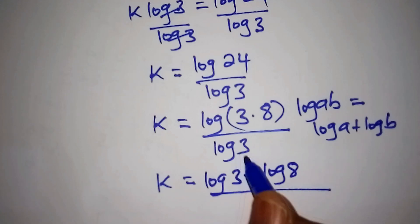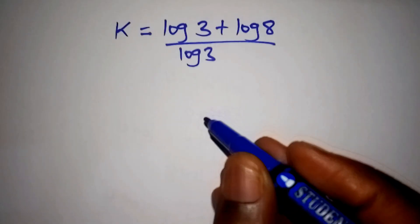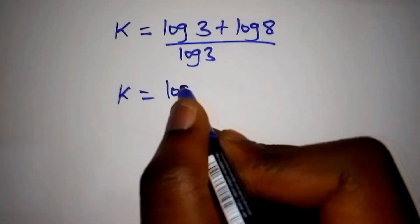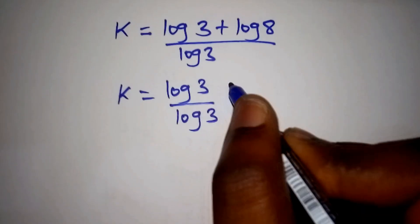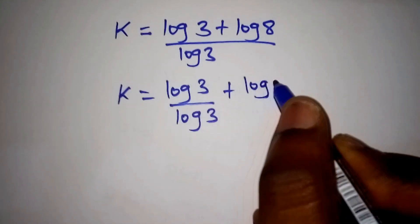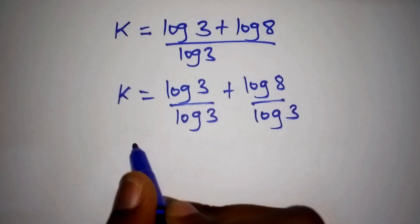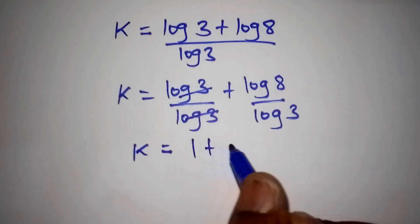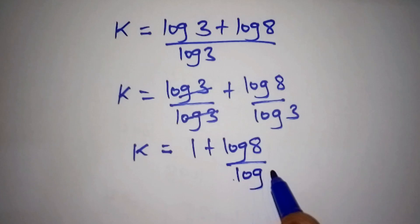We now divide through by log of 3, splitting the fraction: log 3 over log 3 plus log of 8 over log of 3. Log 3 and log 3 cancel, so we have 1 plus log of 8 all over log of 3.